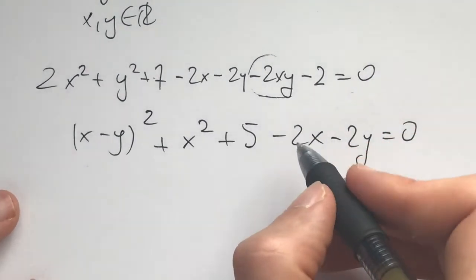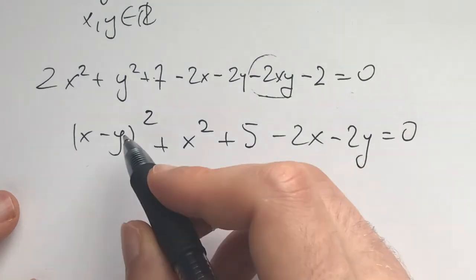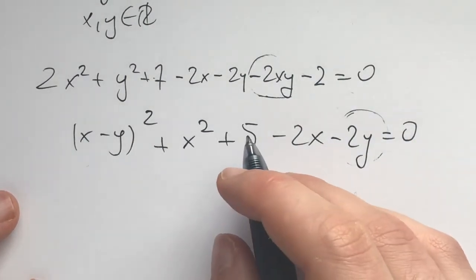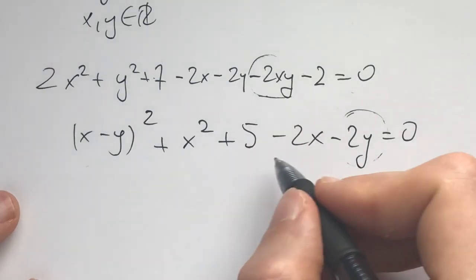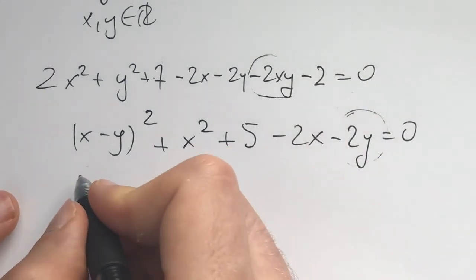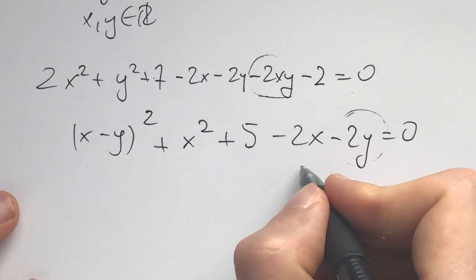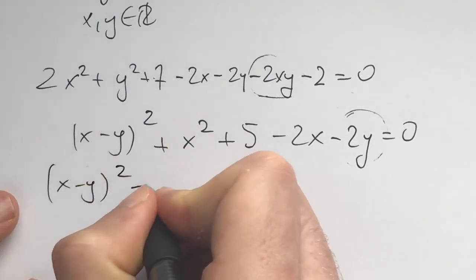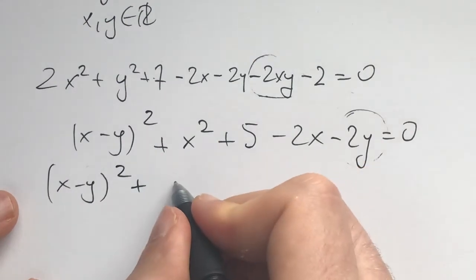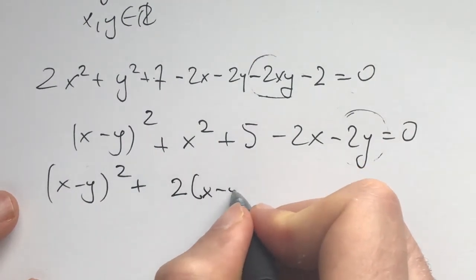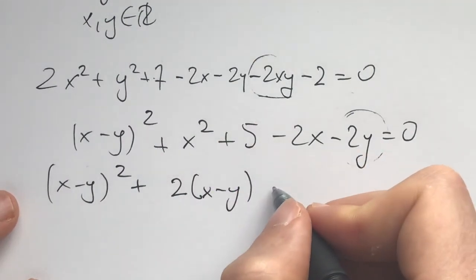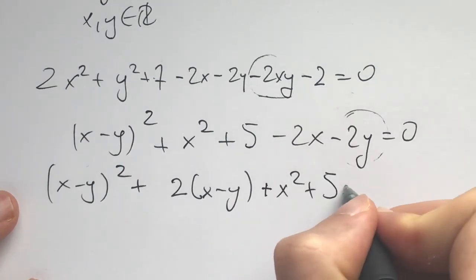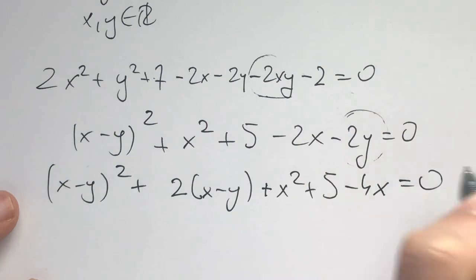Now I'm left with x squared plus 7 minus 5 minus 2x minus 2y equals 0. I still need to handle this x. I still have a y missing here. I need x minus y, so let me add 2x and subtract 2 more x. I'll get x minus y squared plus 2 times x minus y plus x squared plus 5 minus 4x equals 0.